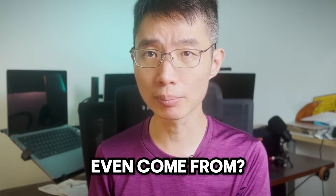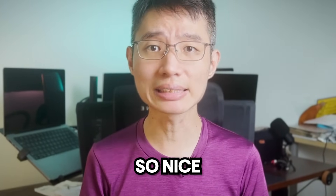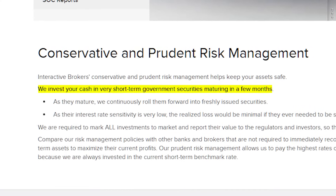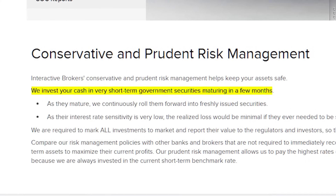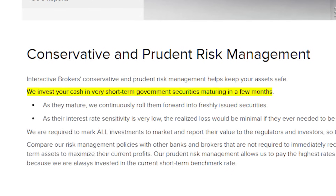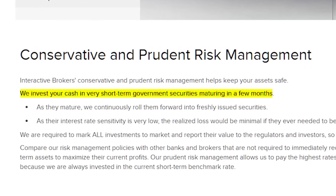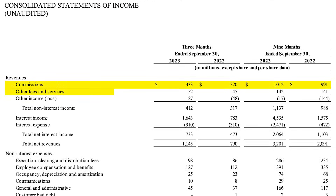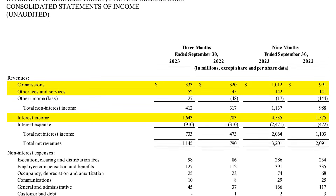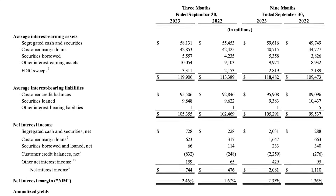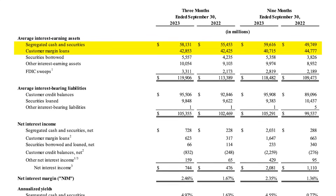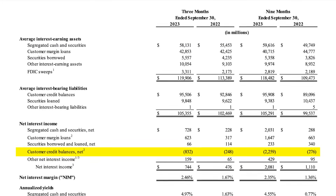But where does this interest even come from? It turns out IBKR invests our cash in very short-term government securities maturing in a few months — stuff like short-term US treasuries such as treasury bills, treasury notes, and reverse repurchase agreements. You can actually see the result of this in their financial statements. Besides the usual commissions and other fees, interest income is a huge part of their revenue. This includes earning interest from our cash, securities, and margin loans. After that, IBKR pays out the interest to us based on our account balances.